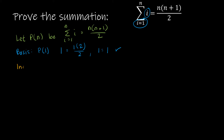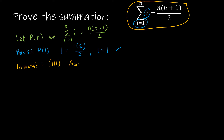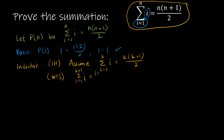Then we're going to do the inductive step, and we start with the inductive hypothesis — a restatement using k instead. I'm going to assume that the summation as i goes from 1 to k of i is equal to k times k plus 1 divided by 2. And I need to show that the summation as i goes from 1 to k plus 1 of i is equal to k plus 1 times k plus 2 divided by 2 — that's what I'm trying to show.